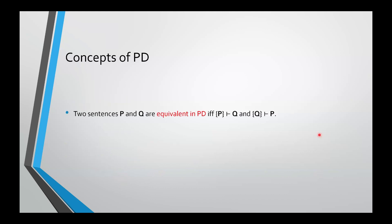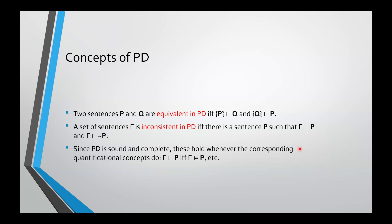Two sentences are equivalent in PD if and only if they are derivable from each other. And a set of sentences is inconsistent in PD if and only if there is at least one sentence. And of course, as we talked about earlier, if and only if, in fact, all such sentences. Such that gamma both entails that sentence and entails its negation.